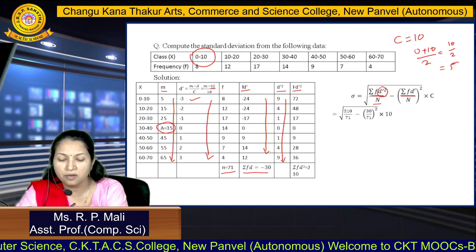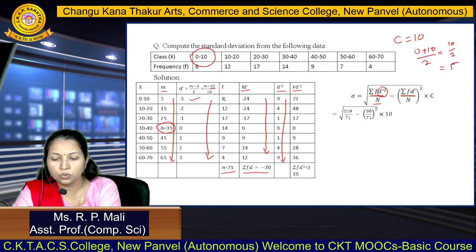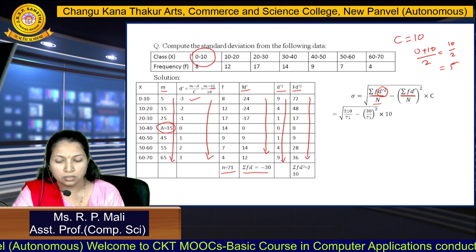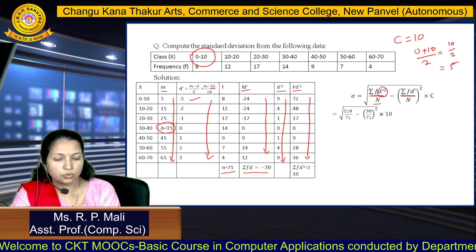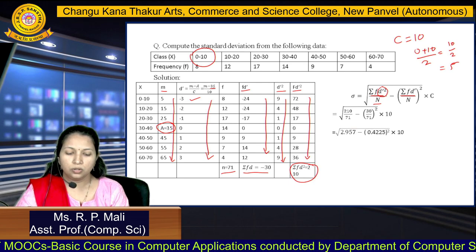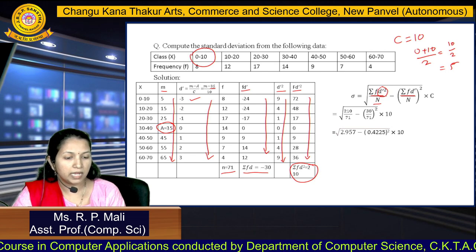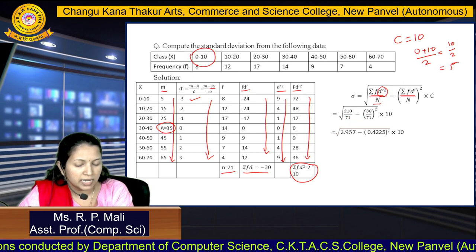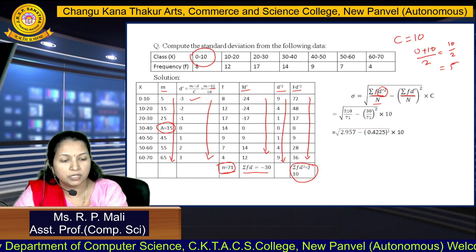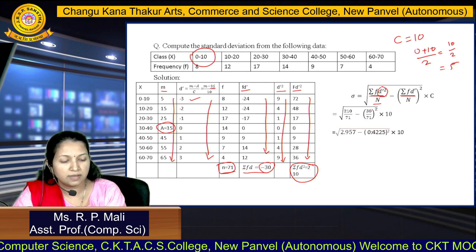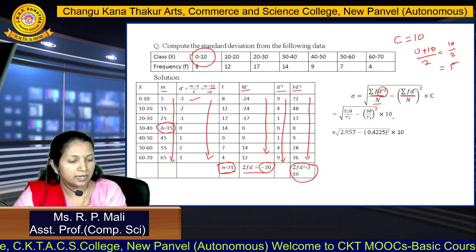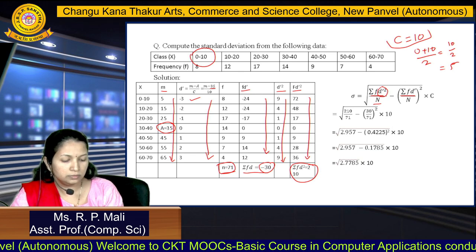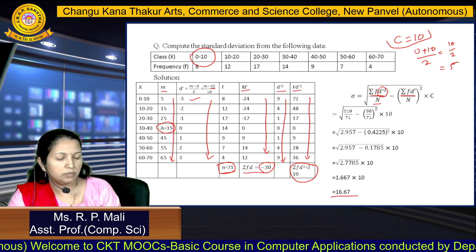After multiplying the squared deviations by frequency and summing, we substitute into the formula: σ = √(210/71 − (−30/71)²) × 10. After calculation, we get σ = 16.67.